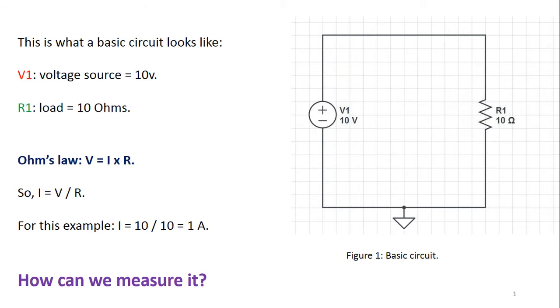This is the basic electronic circuit where there's a voltage source and a load, and there is a current flowing in here. So by Ohm's law, 10 volts over 10 ohms is gonna equal 1 amp. So we know this for sure from Ohm's law.